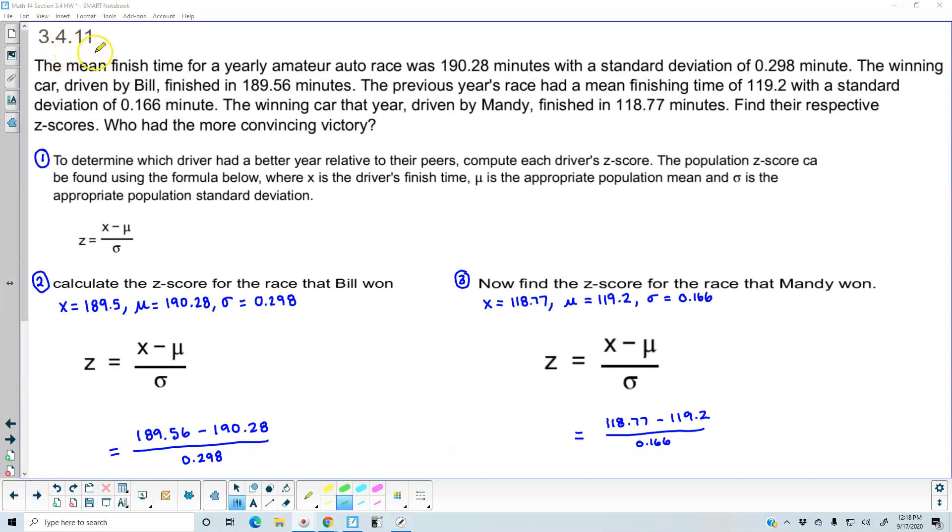Section 3.4.11. The mean finish time for a yearly amateur auto race was 190.28 minutes with a standard deviation of 0.298 minutes. The winning car driven by Bill finished in 189.56 minutes. The previous year's race had a mean finishing time of 119.2 with a standard deviation of 0.166 minutes. The winning car that year, driven by Mandy, finished in 118.77 minutes. We want to find their respective z-scores. Who had the more convincing victory?